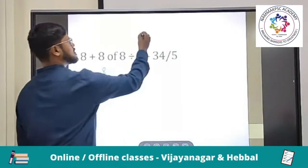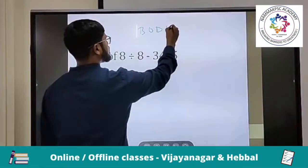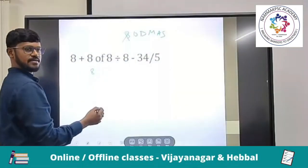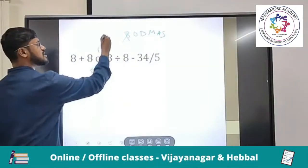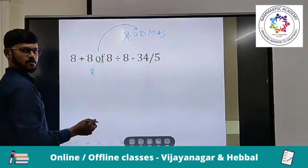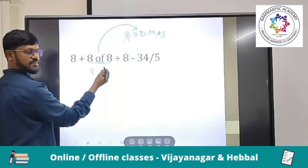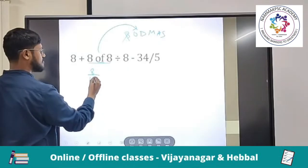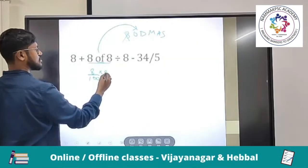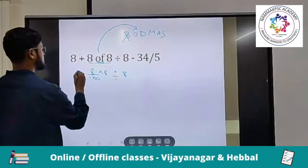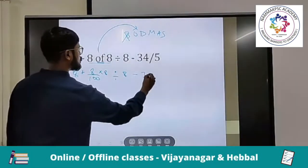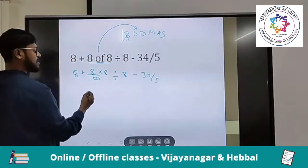Again, BODMAS is writing. Brackets is here? No. Order is there. This 'of' will be considered in this order itself. We have to consider there only. First, we need to solve this particular part. 8 of 8 means what? 8 fraction of 8. Write the similar thing. Minus 34 by 5.